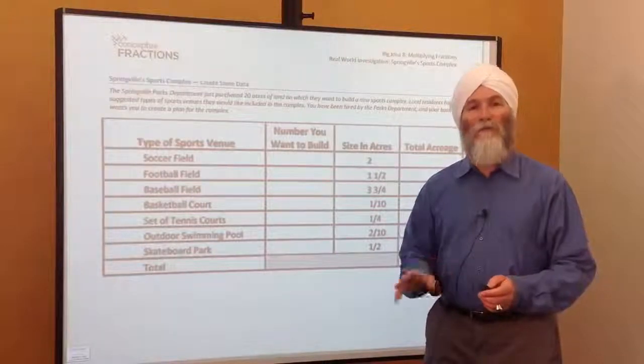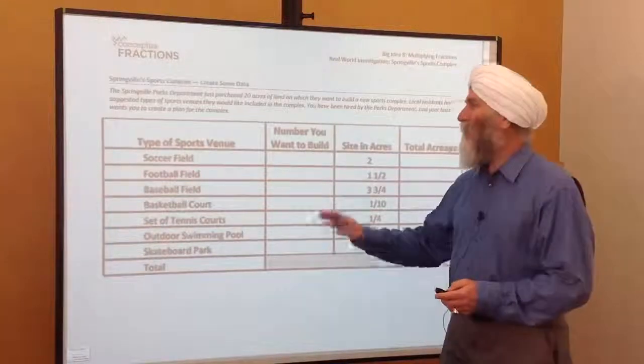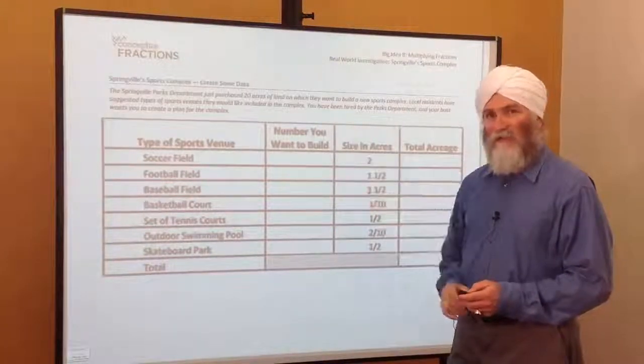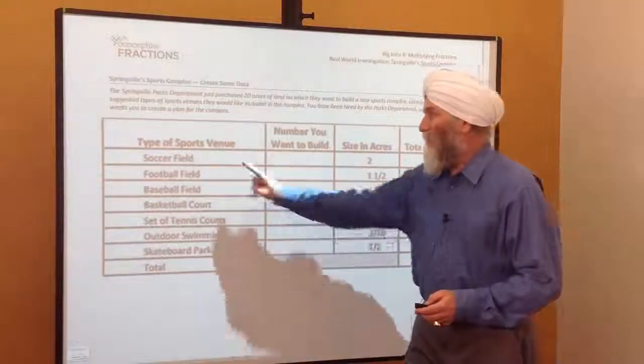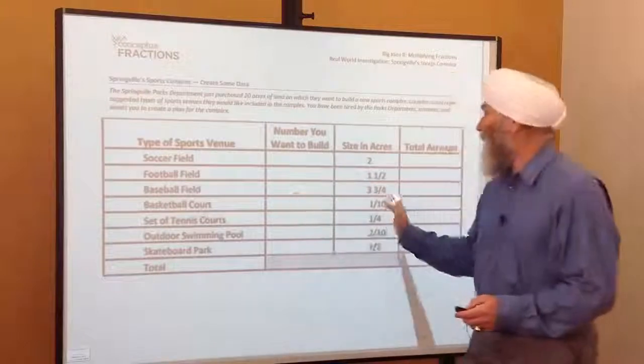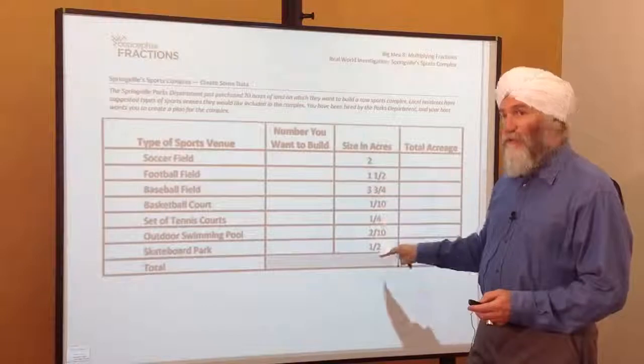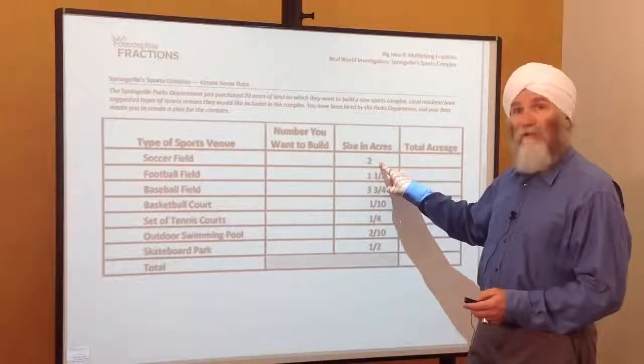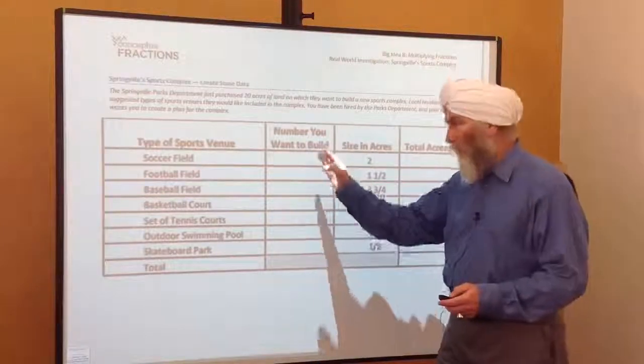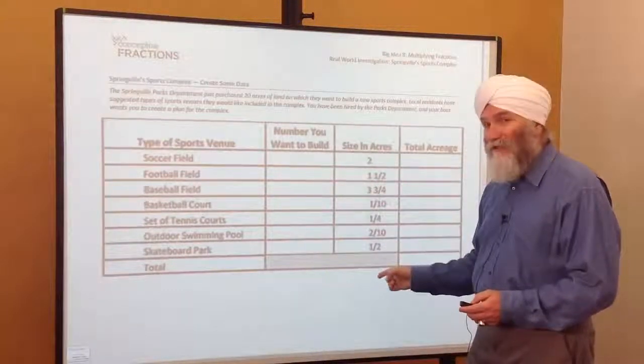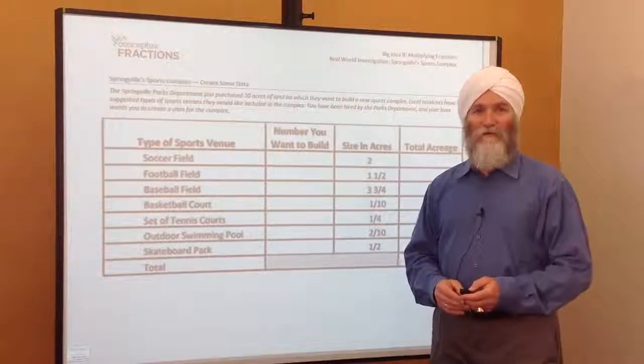And the unit of study culminates with a real-world investigation. It's on a sports complex. Students design their own sports complex. They have 20 acres of land. Do they want to have a soccer field, a football field, a baseball field? Accurate attributions are given for the acreage of each field. A soccer field is around two acres. A football field is around an acre and a half. And the students are going to make their determination of how many they want to build. They're going to multiply with fractions, and they're going to see what the total acreage is and design their own sports complex.